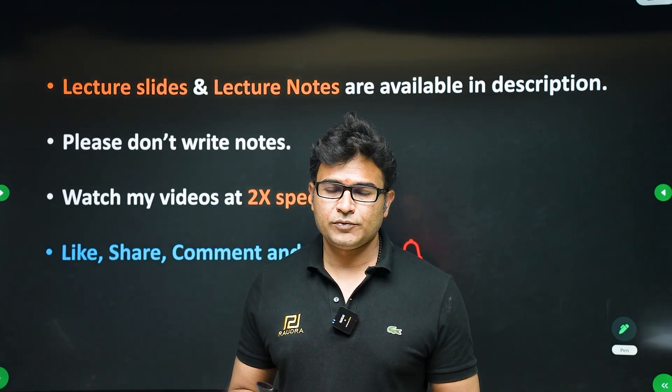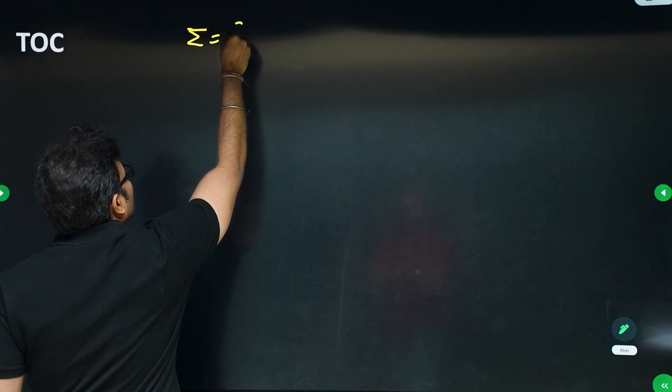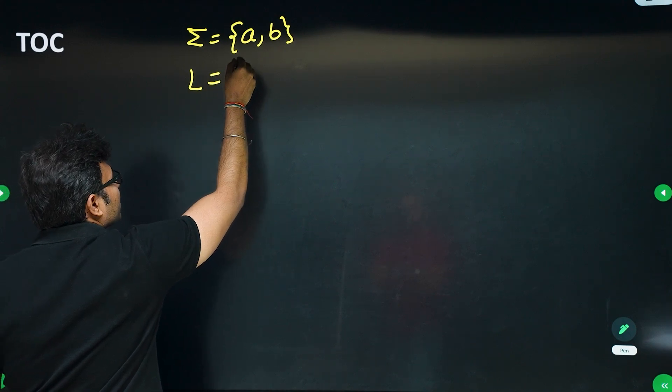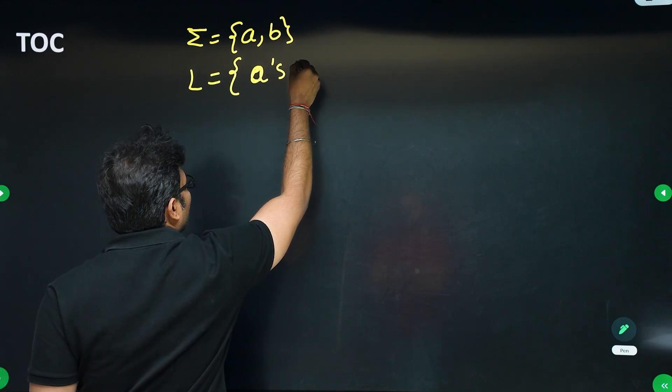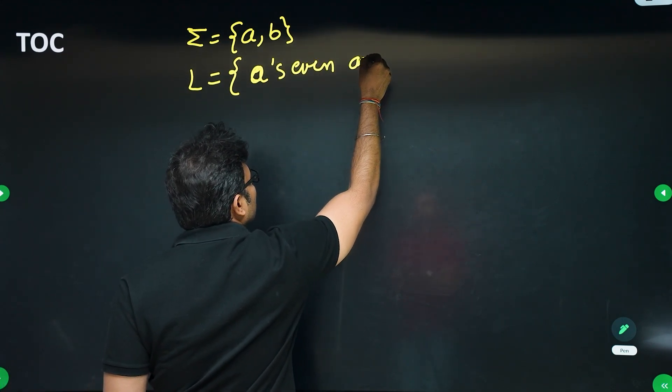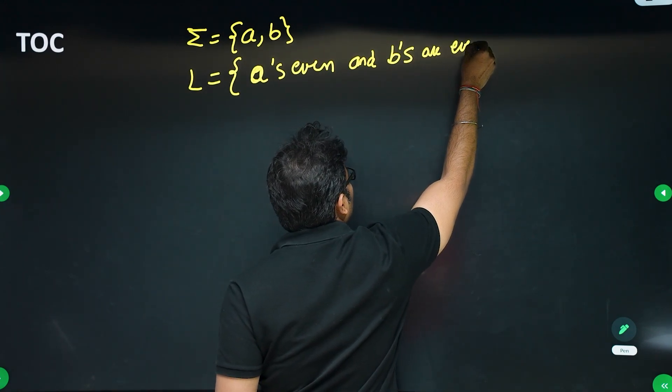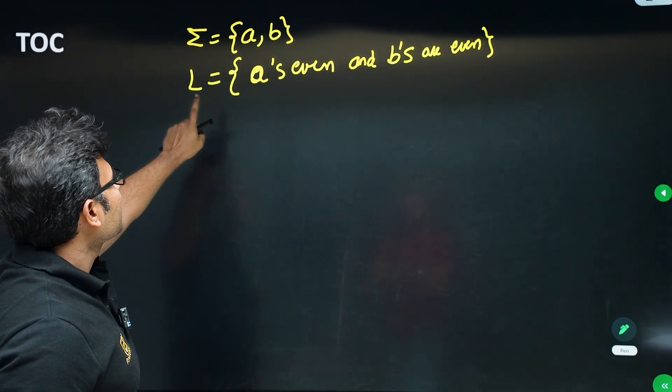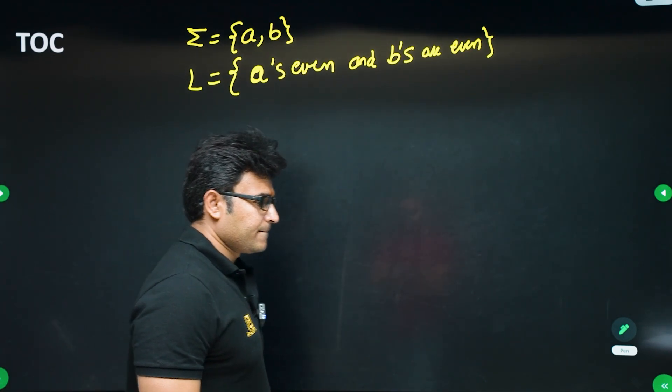So now let us see this question. Sigma equals {a, b}, two symbols only. And the language L is the set of all strings where number of a's are even and number of b's are even.